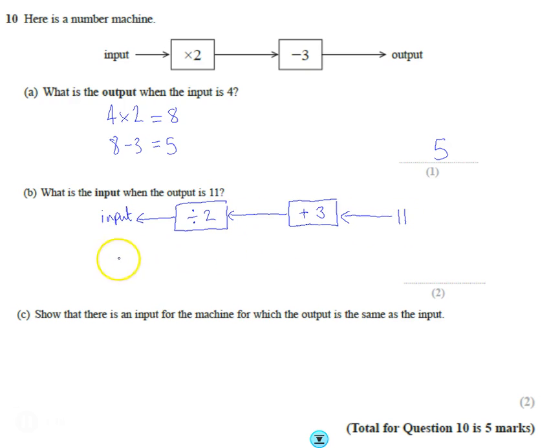So if we start with 11, the first thing we've got to do is add 3, which is nice and straightforward, 14. And then the second step, so 11 goes in, 14 comes out, goes into here, so we're going to do 14 divided by 2, and that means 7 is going to come out. So 7 must have been our input.